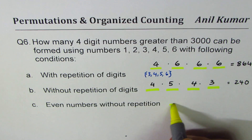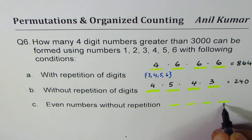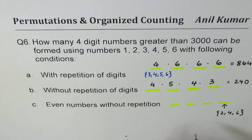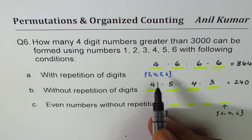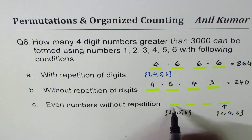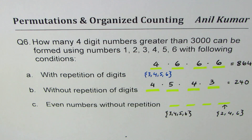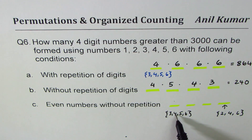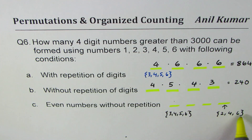If we want even numbers, the last digit can only be two, four, or six. We also need the first digit to be from three, four, five, or six since the number must be greater than 3000. Since digits cannot be repeated, it's not as simple as just putting four in the first place — we need to know which even digit was placed last. So we split into three cases based on the last digit.